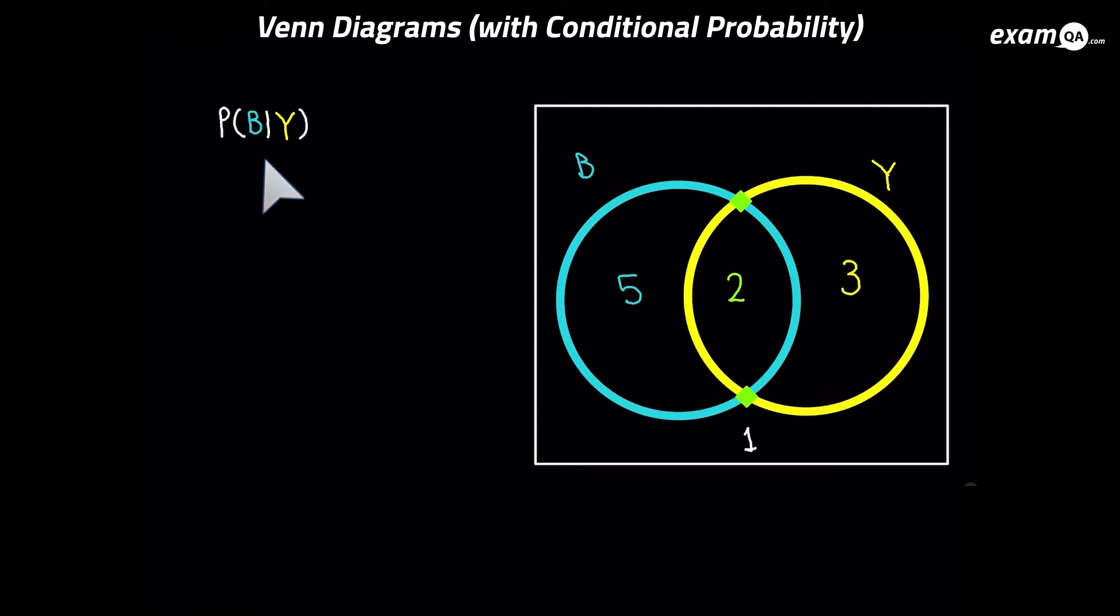Okay so this question says B given Y. So it wants us to work out B but it's given that Y has already happened. And since we know Y has already happened, well there's no point looking at anything else. We might as well only look at Y because it's given that Y has definitely happened.